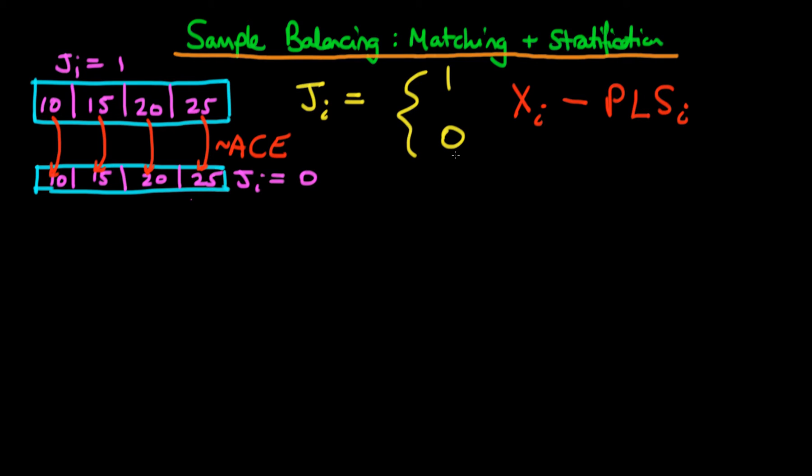Intrinsically, there were some problems with stratification. One problem is that it was completely arbitrary that I chose to break up my sample into four subsamples — I could have chosen ten, or I could have chosen only one. There is no sensible answer for at what level I should stratify my sample. You could say you'd do it at the individual level, but that in turn poses problems when trying to match across covariates, which we'll come on to in a minute.